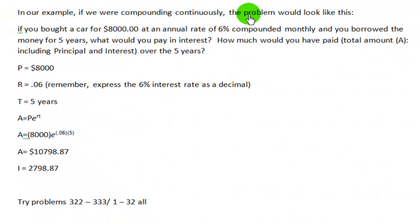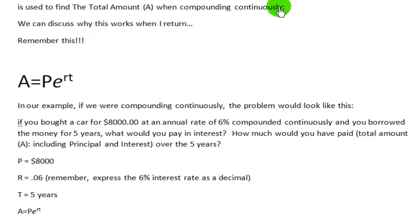So, in our example, if we were compounding continuously, the problem would look like this. If you bought a car for $8,000 at an annual rate of 6%, compounded continuously, and you borrowed the money for five years, what would you pay in interest? How much would you have paid total? And that's, again, the variable A, including principal and interest over the five years. Well, the principal is the same, the rate is the same, the time is the same. You simply substitute it into the formula, A equals P times E to the RT.